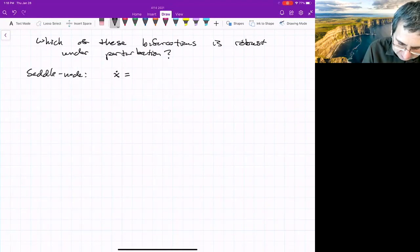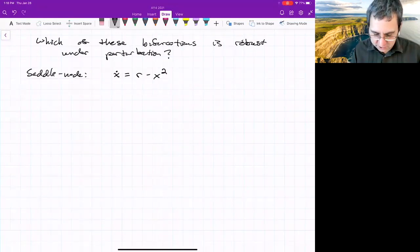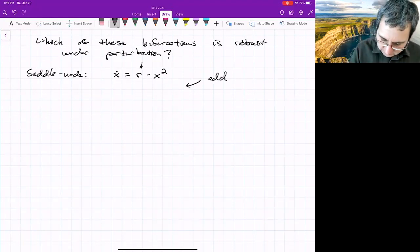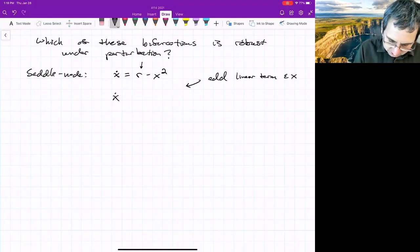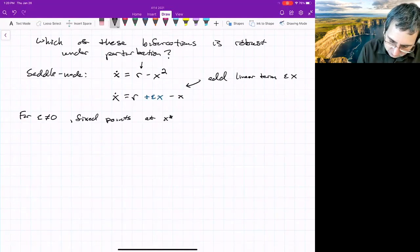The saddle node, it's sufficient to just perturb the normal form. So if the normal form looked like x dot equals r plus x squared, then we could perturb this. We want to add the lowest order term that would perturb it and see what happens. There's already a zeroth order term that's r, so perturbing that wouldn't make any sense. There's no linear term, so add a linear term that's got another parameter. So the linear term will be epsilon x. If we perturb this, we've got x dot equals r plus epsilon x minus x squared.